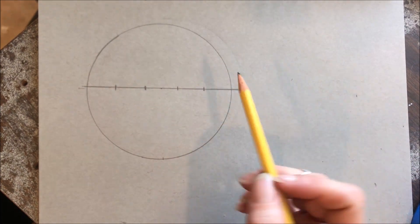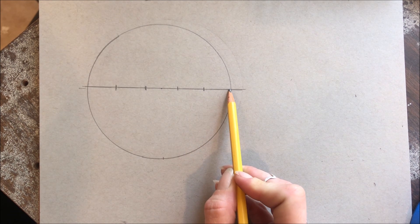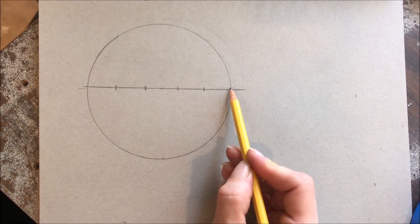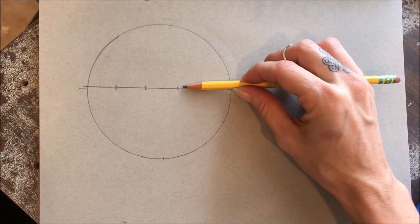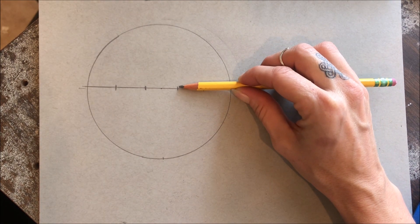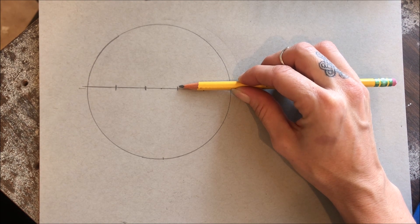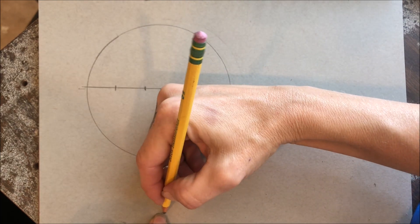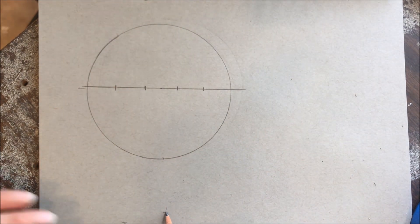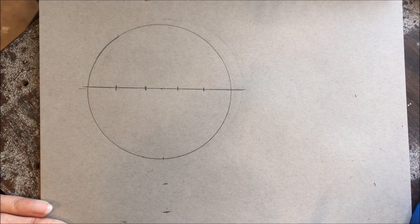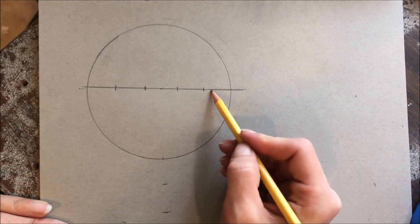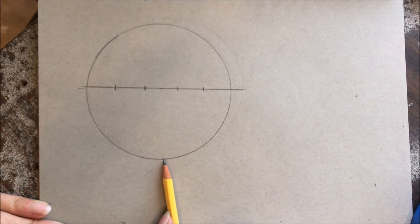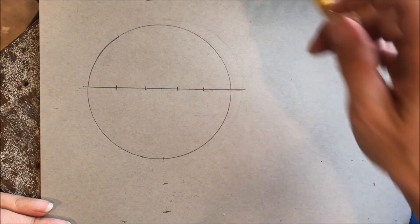So you're going to put in four lines, dividing it up into five pieces. One, two, three, four, five. Remember how we said the human head is five eyes wide? So that is going to be our representation.